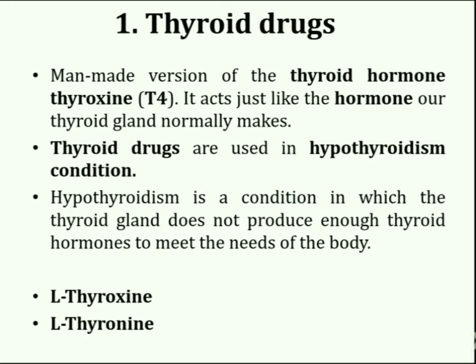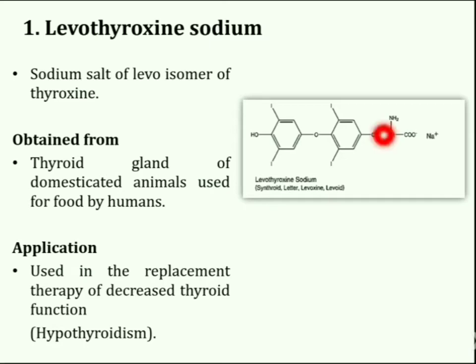Levothyroxine and liothyronine are the drug candidates used in the case of hypothyroidism. Levothyroxine sodium is the sodium salt of the levo-isomer of thyroxine, which is an active physiological principle obtained from the thyroid gland of domesticated animals used for food by humans. Levothyroxine sodium is used in replacement therapy of decreased thyroid function due to hypothyroidism.